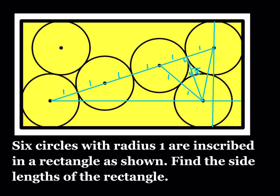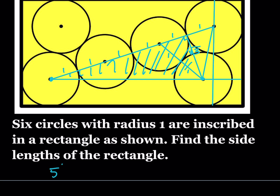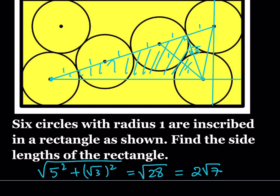We'll definitely use that information. Notice that here we have the two centers and we're going to find how far apart they are. I'll start by using the Pythagorean theorem in the right triangle here — the big one. Let me go ahead and shade it so you can see better. In that right triangle, we know the height and the base, and we're going to find the hypotenuse. The base is 5 units and the height is √3. So we're basically talking about √(5² + (√3)²), which is √(25 + 3) = √28 = 2√7. So now I know that this length is 2√7.